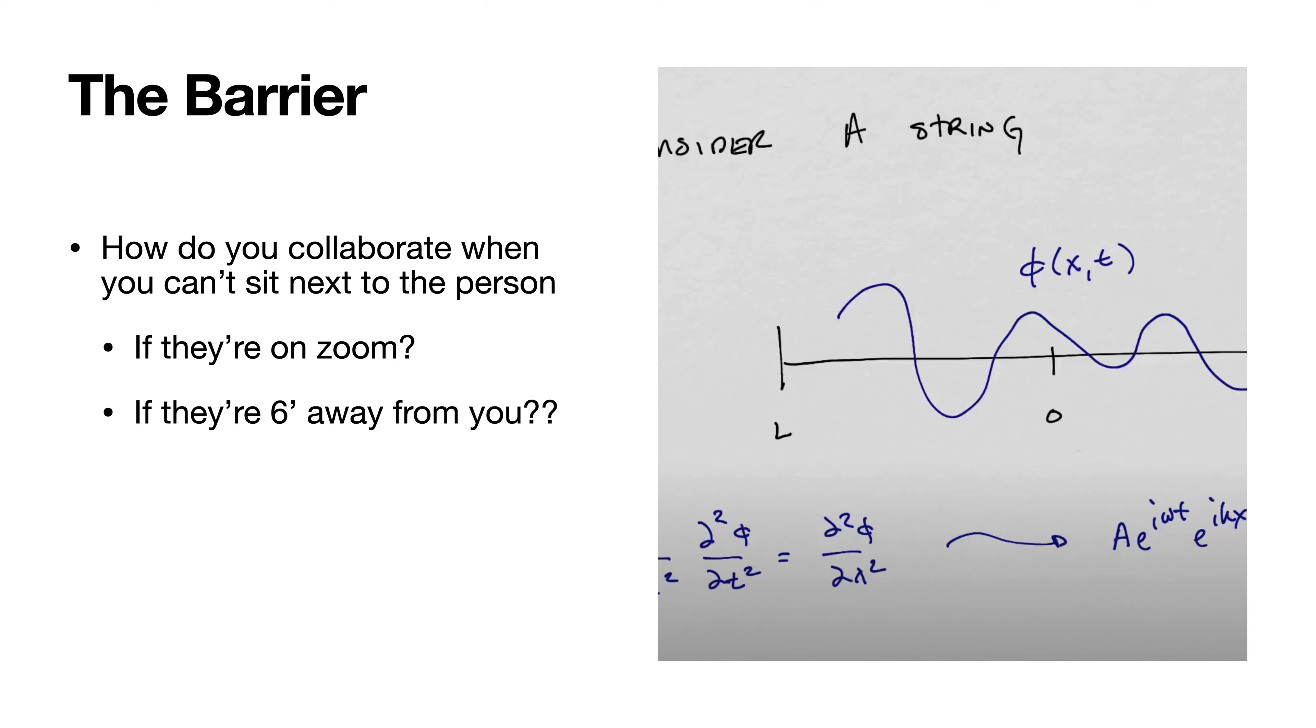The barrier that we saw was, how can you possibly collaborate with someone when you can't sit next to them? So much active learning has to do with turn to your neighbor, ask a question, work out this problem on a whiteboard. How can you do that when the other person is in a breakout room on Zoom, or even if they're six feet away from you? Finding a solution to that immediate task of how to collaborate was the core of our course innovation grant.